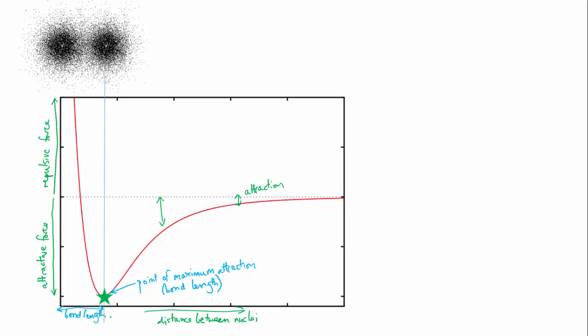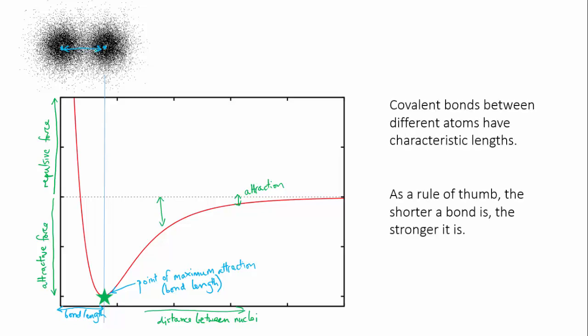This preferred distance, the length of the bond, is different for different atoms. A rule of thumb says that the shorter a bond is, the stronger it is. This makes sense. If the electrostatic attraction is able to pull the atoms closer together, then it must be able to cancel out a greater level of repulsion from the nuclei. Double and triple bonds are shorter than single bonds because there are more electrons involved, and so a greater level of electrostatic attraction.